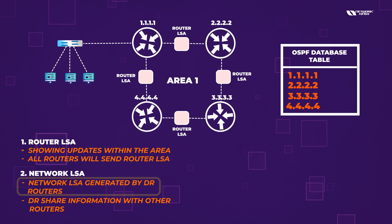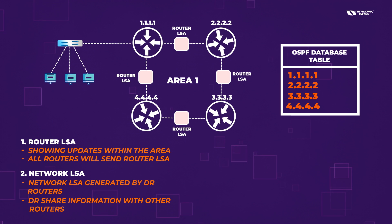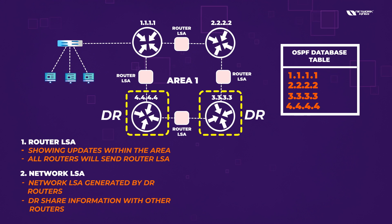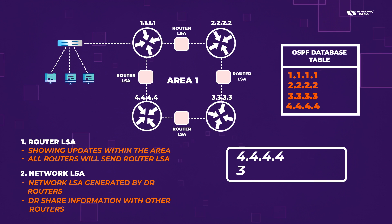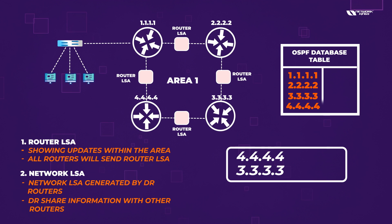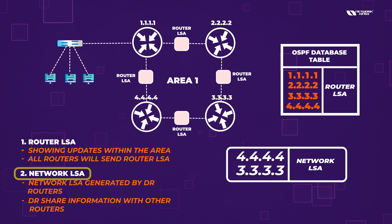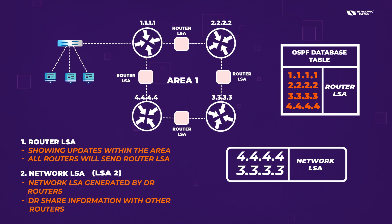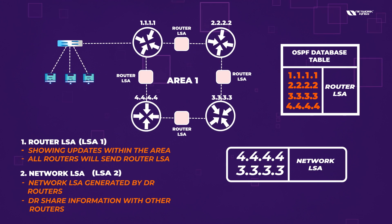The Network LSA is generated by the DR. Among four routers we may have around two DRs — suppose this one is DR and this one is DR. The Network LSA will contain the router ID of the DR router. To summarize: Router LSA is called LSA Type 1, and Network LSA is called LSA Type 2.